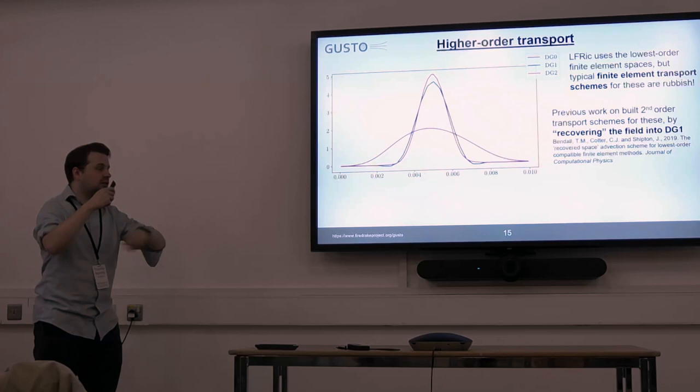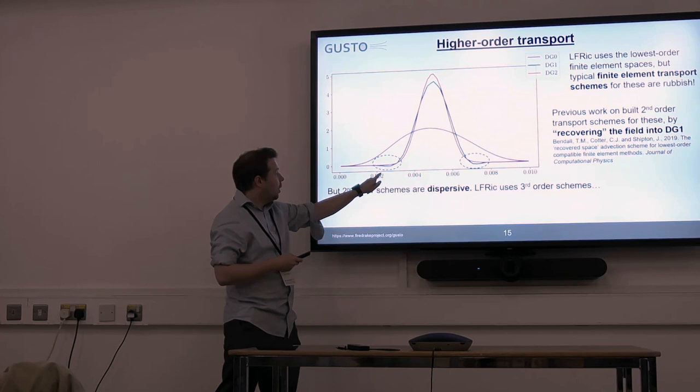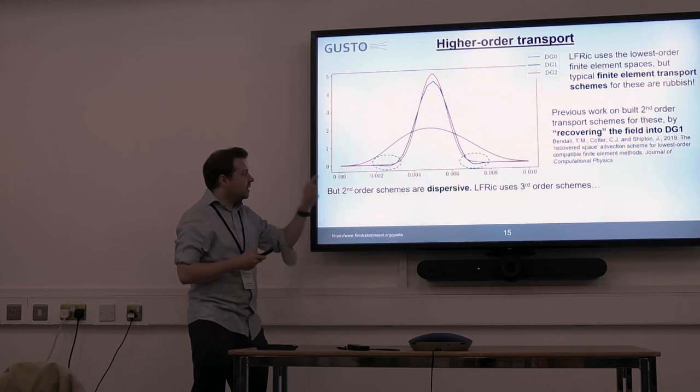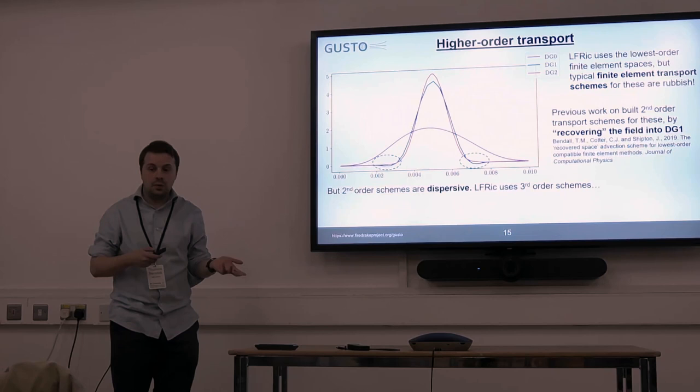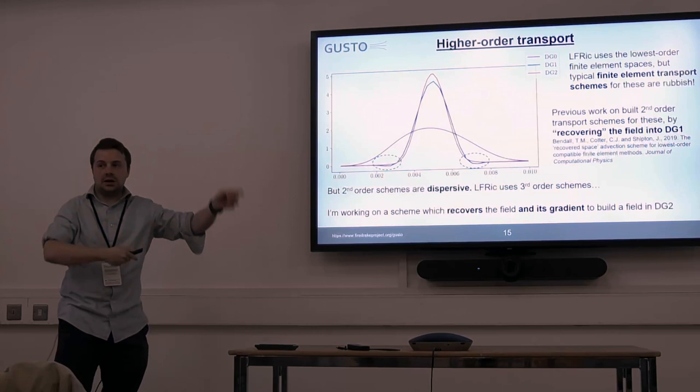With a second order scheme you get something like this blue line. Second order schemes tend to be dispersive in their errors, meaning you get oscillations as things get transported. For this reason Elfrick actually uses a third order scheme, which would give something more like the red line. I've been thinking about how we could do that — I've got a harebrained scheme where we don't just reconstruct the field but also reconstruct its gradient, then solve some problem to get an even higher order solution that you then transport.